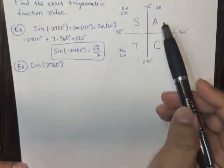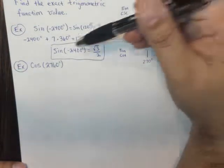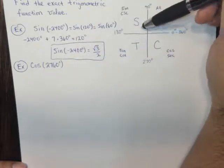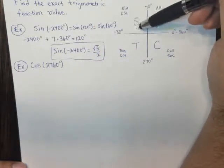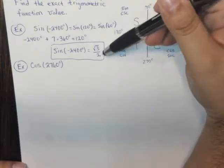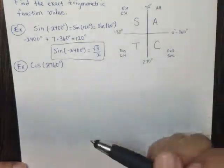Now we're going to do one more. Oh, and by the way, I forgot to mention. Sine, since we were in this quadrant with 120, sine is positive. So that's why this is positive. So let's see what happens with cosine here.